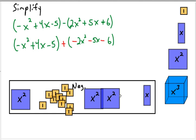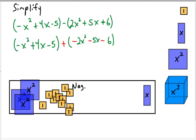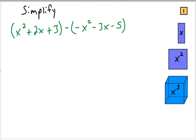That leaves me with a bunch of negative stuff. I have 3 negative x squareds, so that's negative 3x squared. I have 1 negative x, so minus x. And then 1 through 11 negative ones, so minus 11. Let me double-check: negative 3x squared minus x — yes, that is correct. All right, moving on.